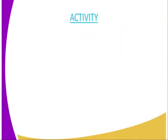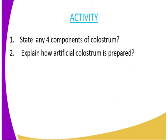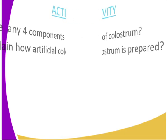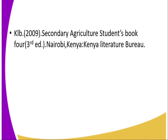We have come to the end of today's lesson. I'm going to give you an assignment. First question: state any four components of colostrum. Second question: explain how artificial colostrum is prepared. For reference, you can refer to the Secondary Agriculture student book four, published by the Kenya Literature Bureau.